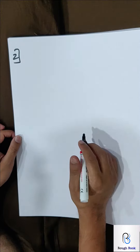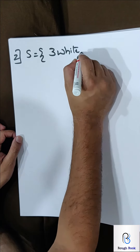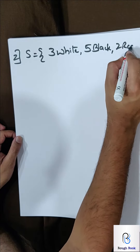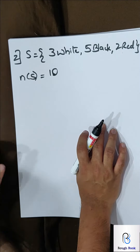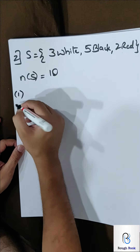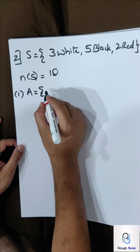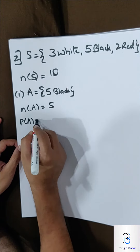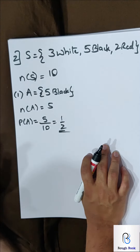Sum number 2: A bag contains 3 white, 5 black, and 2 red balls. What is your sample space? 3 white, 5 black, and 2 red — total number of sample is 3 + 5 + 2 = 10. A ball is drawn from the bag without looking. Find the probability that the ball drawn is a black ball. How many black? 5 black. So number of A = 5. Probability of A = 5 by 10 = 1 by 2.